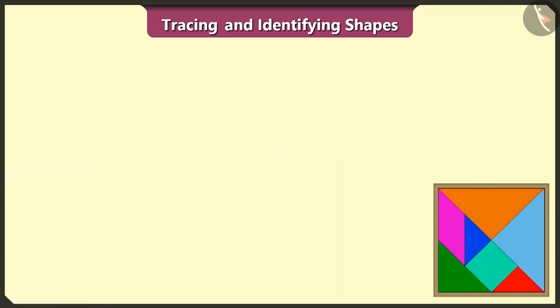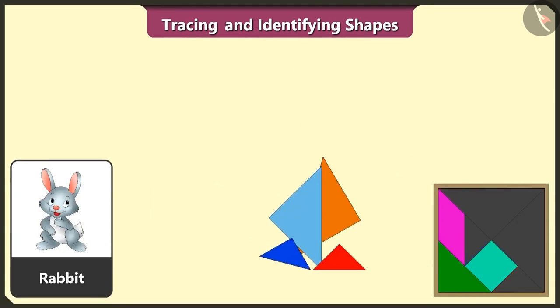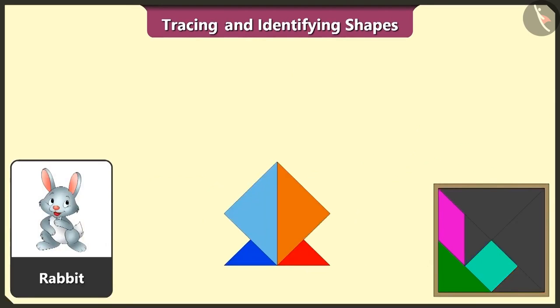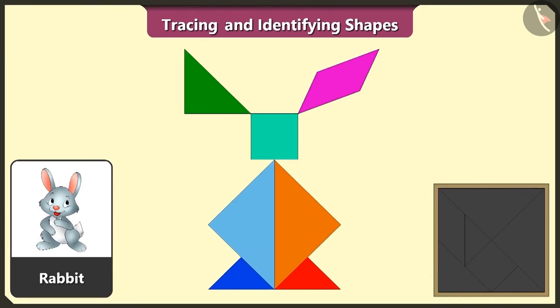This is a rabbit. Now we will try to create a rabbit using 4 triangles, 1 square, 1 more triangle and 1 quadrilateral. See, rabbit is ready.